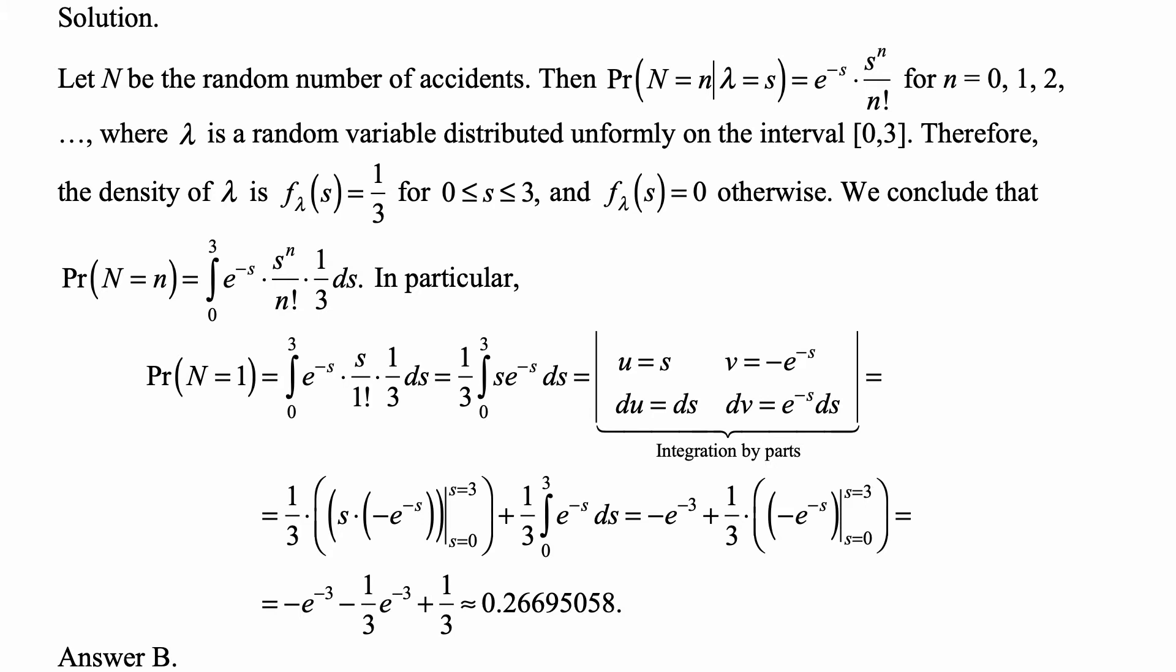We conclude that probability of N equals n is the integral from 0 to 3 over all possible values of s, which are from 0 to 3, of e to the minus s times s to the nth over n factorial times 1/3 ds. So we calculate the marginal probability function by taking the integral over all possible values of the parameter lambda.